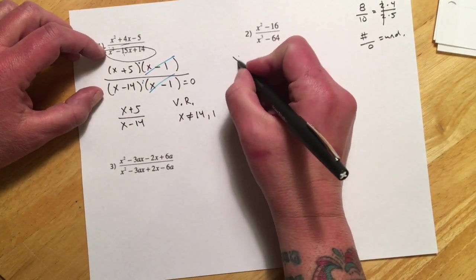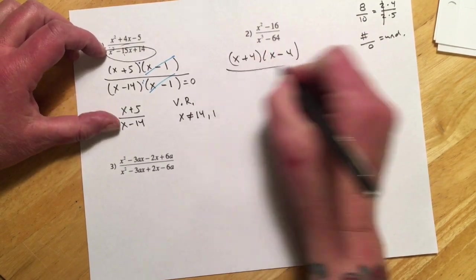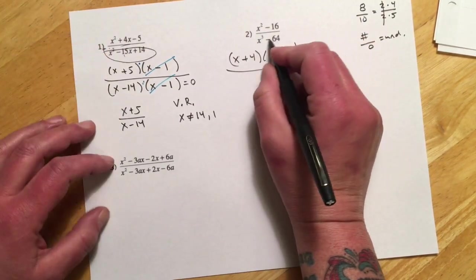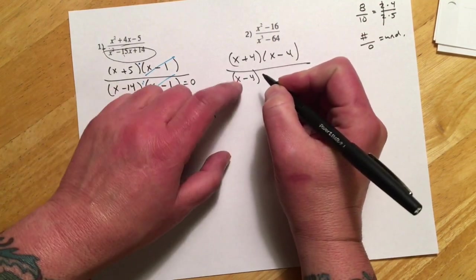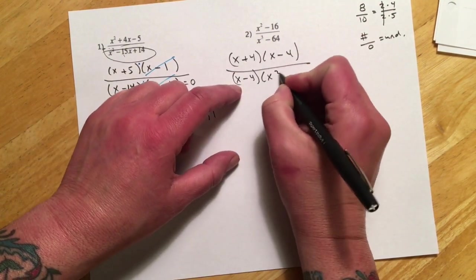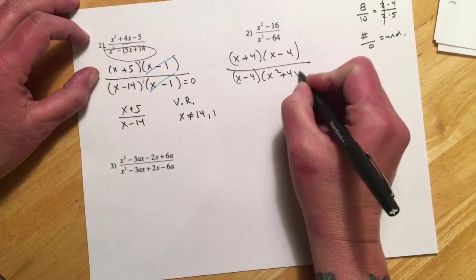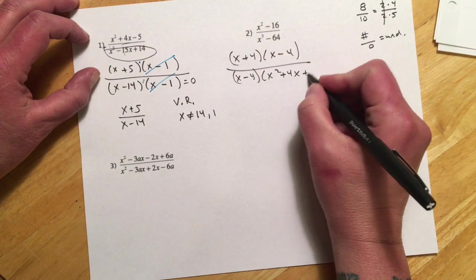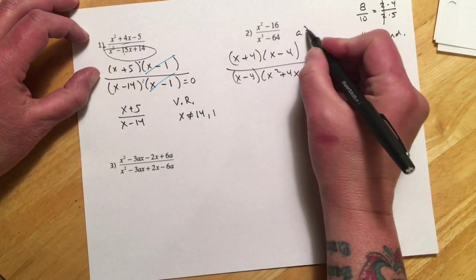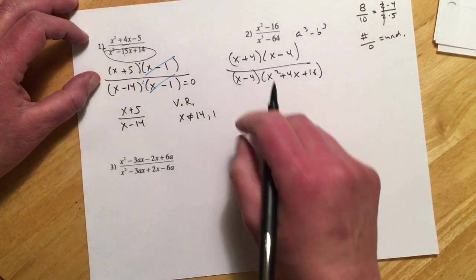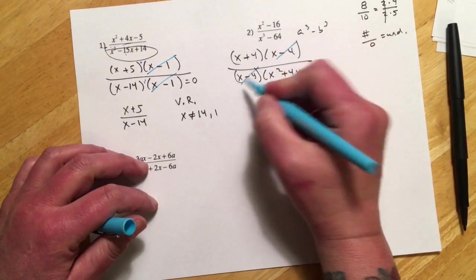let's see. So the numerator is going to factor to x plus four and x minus four. The denominator, that's our difference of cubes. So that's going to be x minus four. And then remember, we go x times x is x squared, x times four is four x, and it'll be a plus. Four times four is sixteen. And so that's the a cubed minus b cubed formula. And so then I can cancel. So I can knock out those.